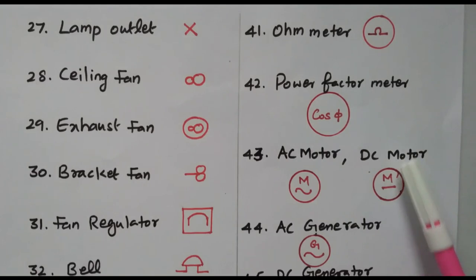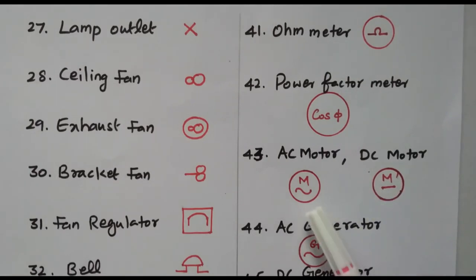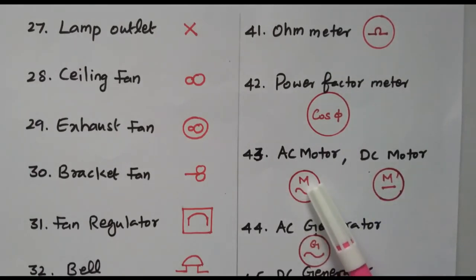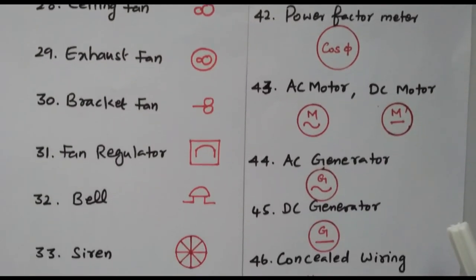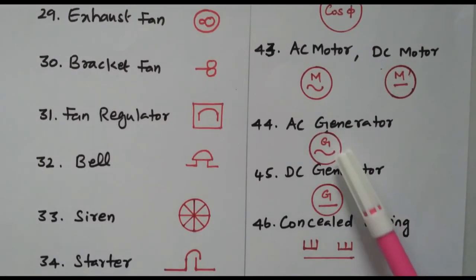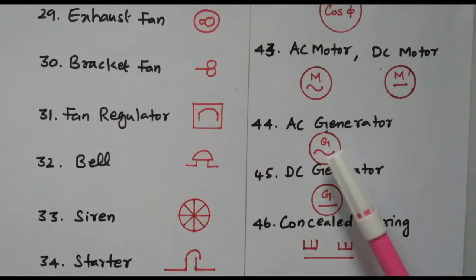Then AC motor or DC motor: the symbol is a circle with M. DC motor has a straight line inside representing DC current, and AC motor has a sine wave inside. Similarly for DC generator and AC generator, represented by a circle with G. A straight line means DC and a sinusoidal wave means AC.